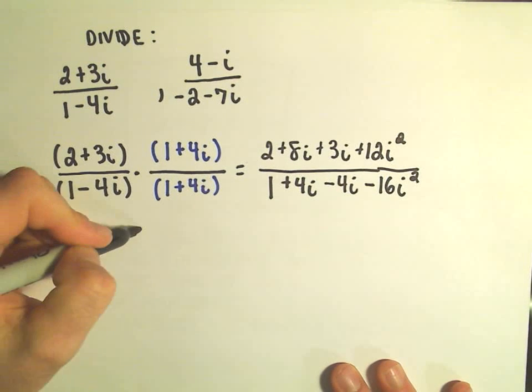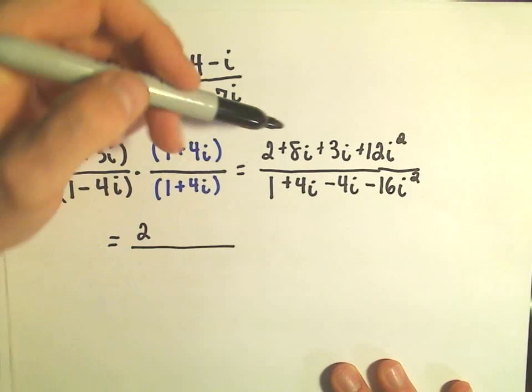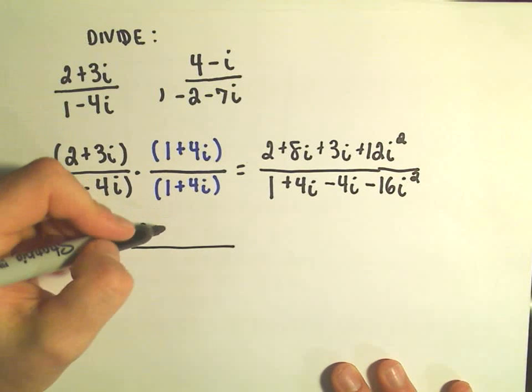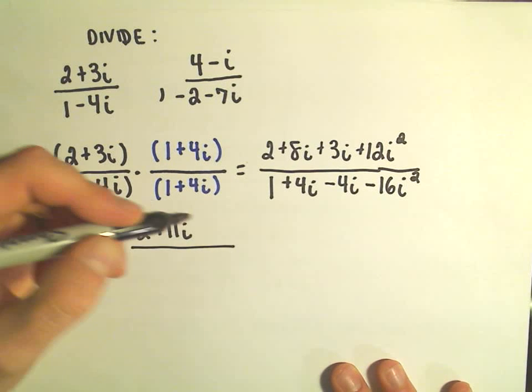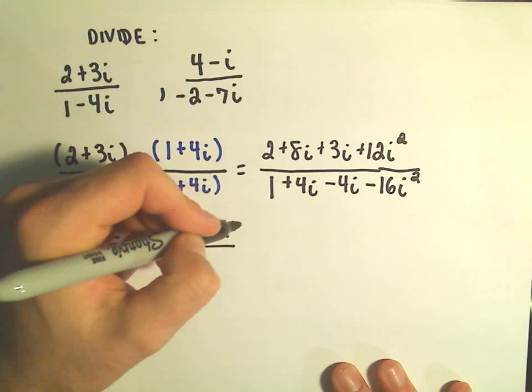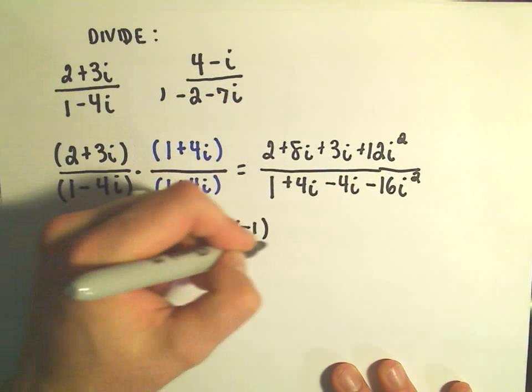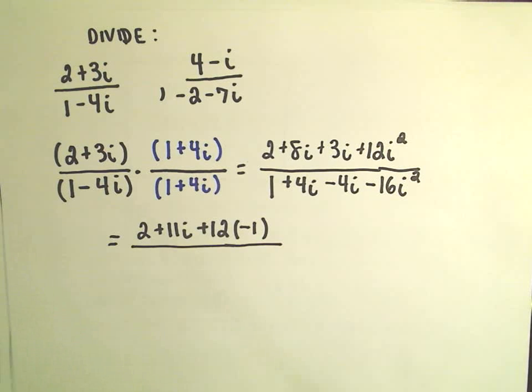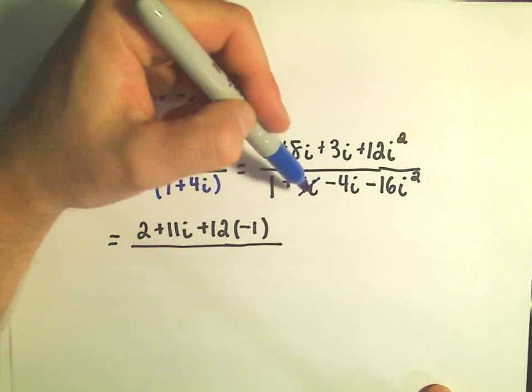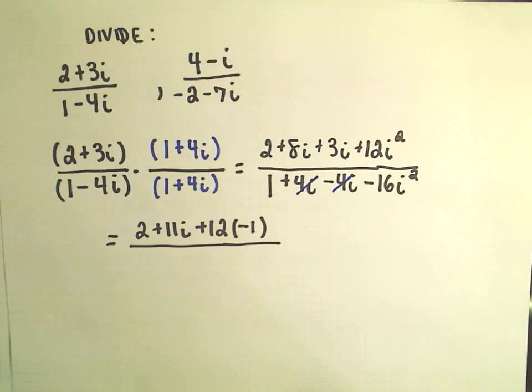So it looks like in the numerator, we have 2. We have positive 8i and positive 3i. That's positive 11i. Plus 12. And we can replace the i squared with negative 1. In the denominator, notice the imaginary, the 4i and the negative 4i cancel out.